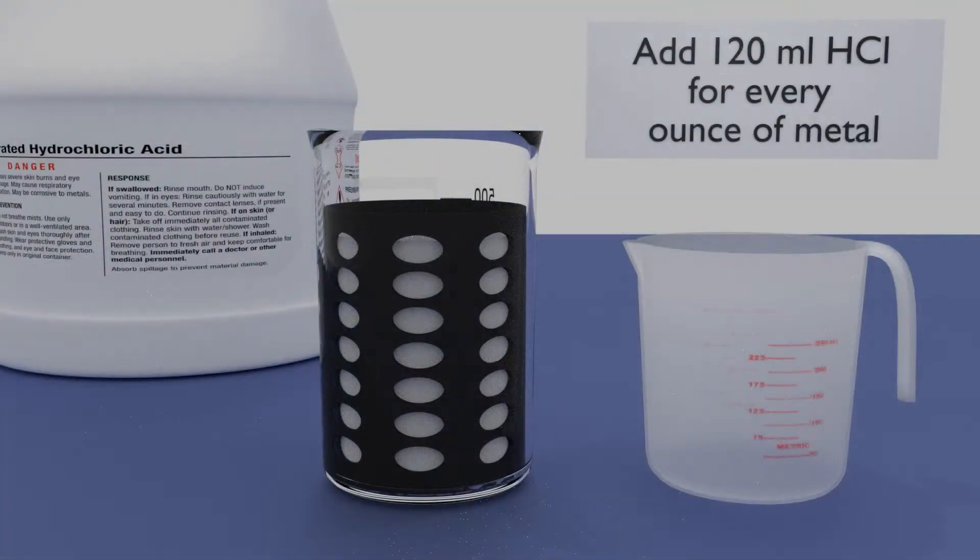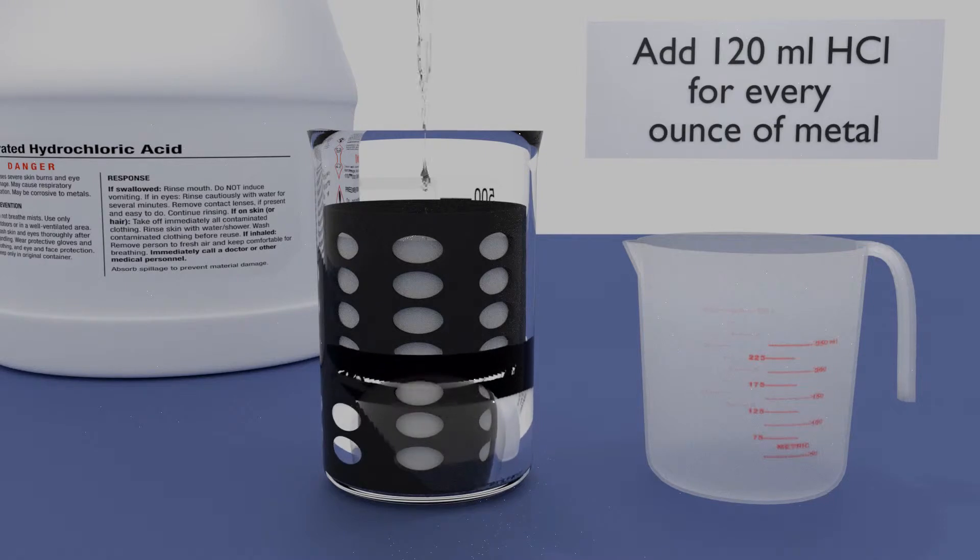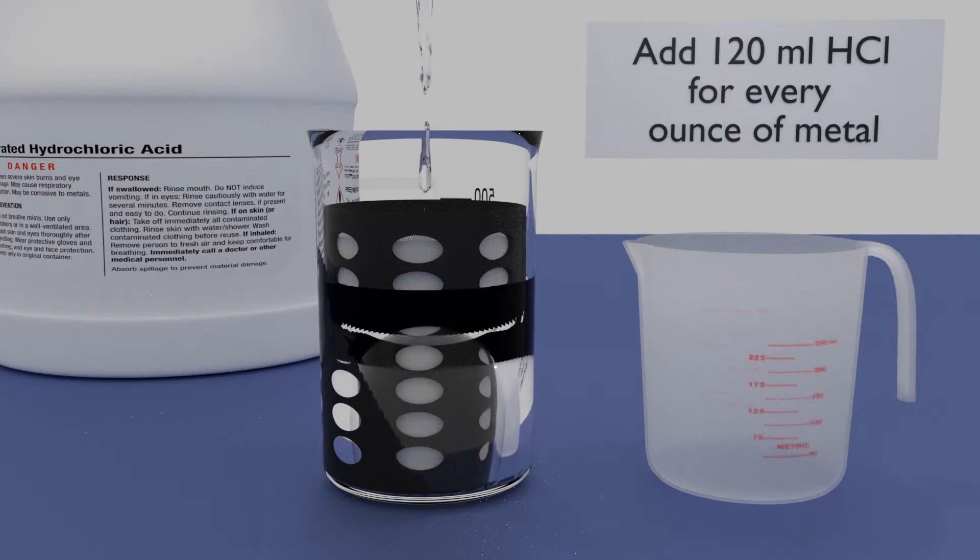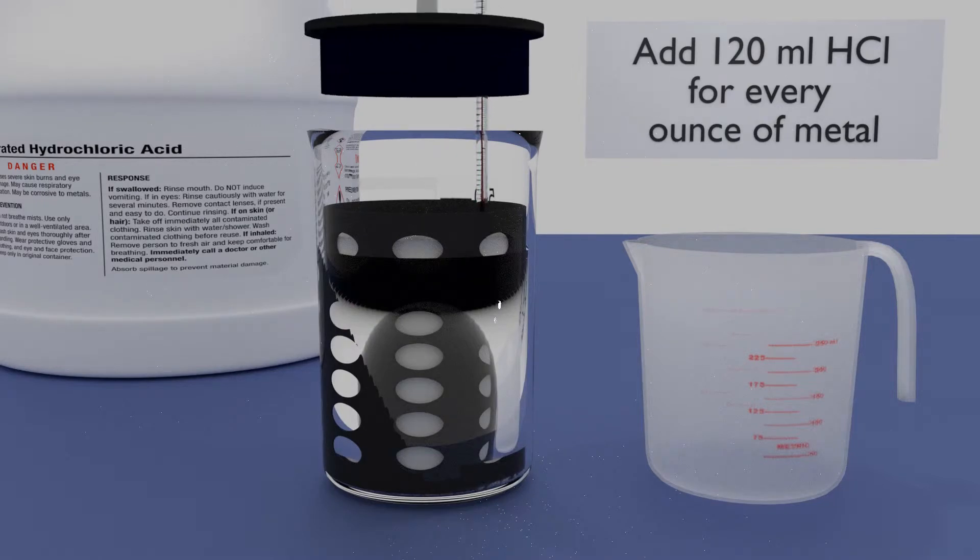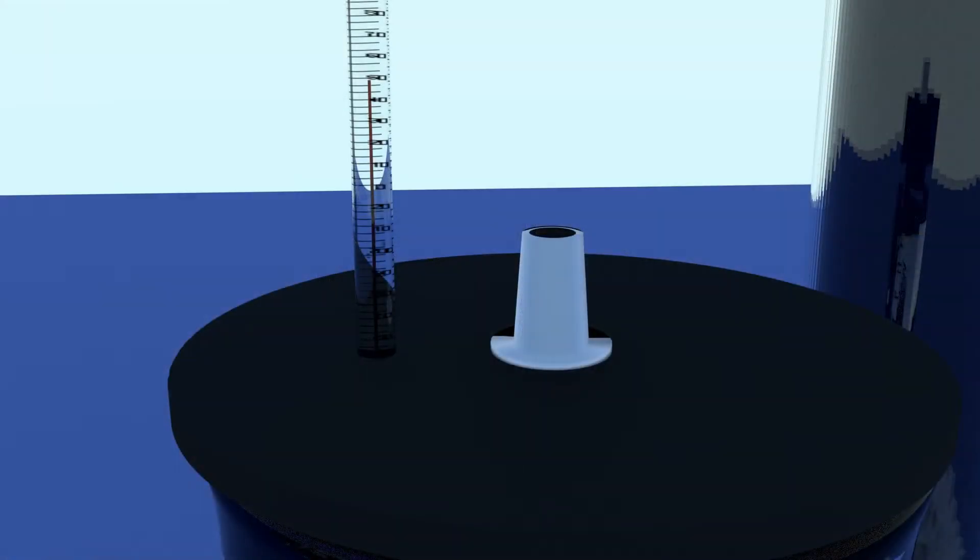Take the beaker to a well-ventilated area, preferably outdoors. Add 120 ml of hydrochloric acid for each ounce of metal. Replace the cap and bring back indoors. Connect the quick connects. The fumes will now pass through the scrubber, removing both their smell and corrosion.